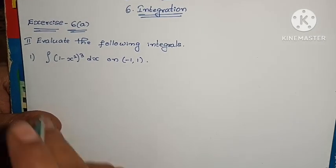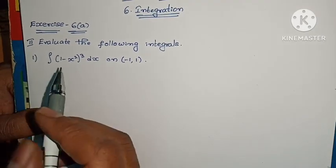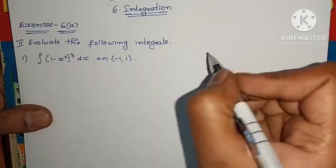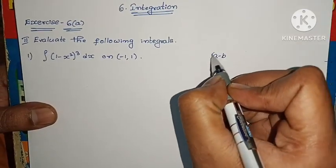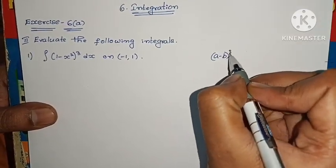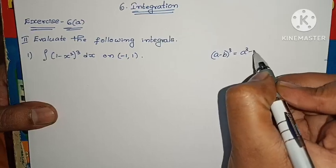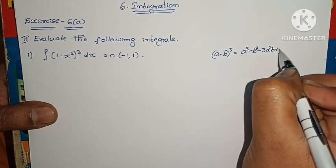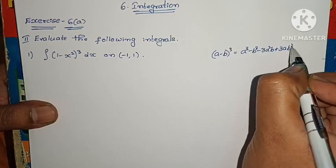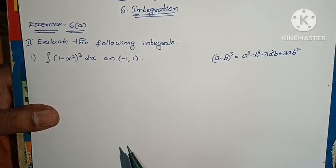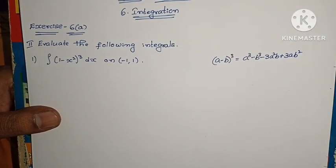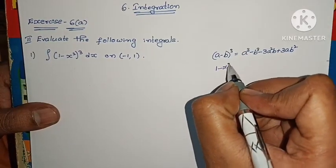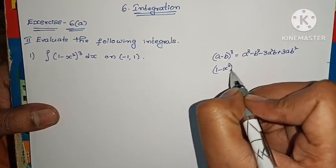Evaluate the following integrals. The 1st one is integral of (1 minus x squared) whole cube dx. We use the (a minus b) whole cube formula: a cube minus b cube minus 3a squared b plus 3ab squared. This formula is very important.